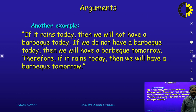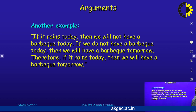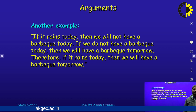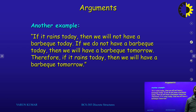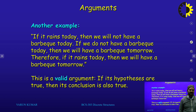Another example: my first statement is 'if it rains today, then we will not have a barbecue today.' My second statement is 'if we do not have a barbecue today, then we will have a barbecue tomorrow.' Therefore, the conclusion is 'if it rains today, then we will have a barbecue tomorrow.' This is a valid argument: if its hypotheses are true, then its conclusion is also true.